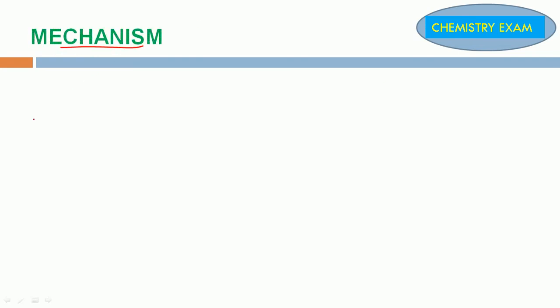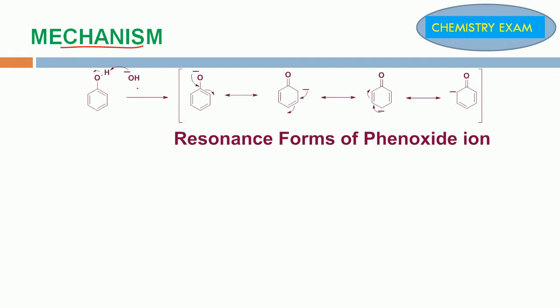Mechanism: In the first step, base reacts with phenol. The base removes the proton from phenol to form phenoxide ion. This phenoxide ion is resonance stabilized.